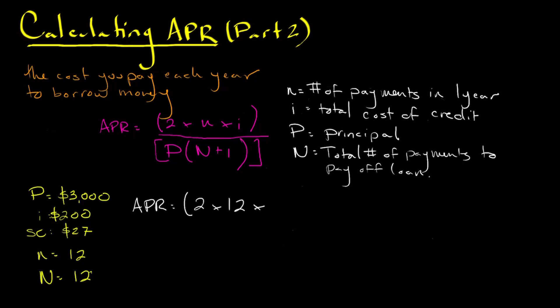We know that that is a combination of the interest that we pay and any other payments or fees associated with the loan. So what we're going to do is we're going to add these two numbers together, $200 and $27, to get $227. And this represents our total cost of credit for the entire year period.